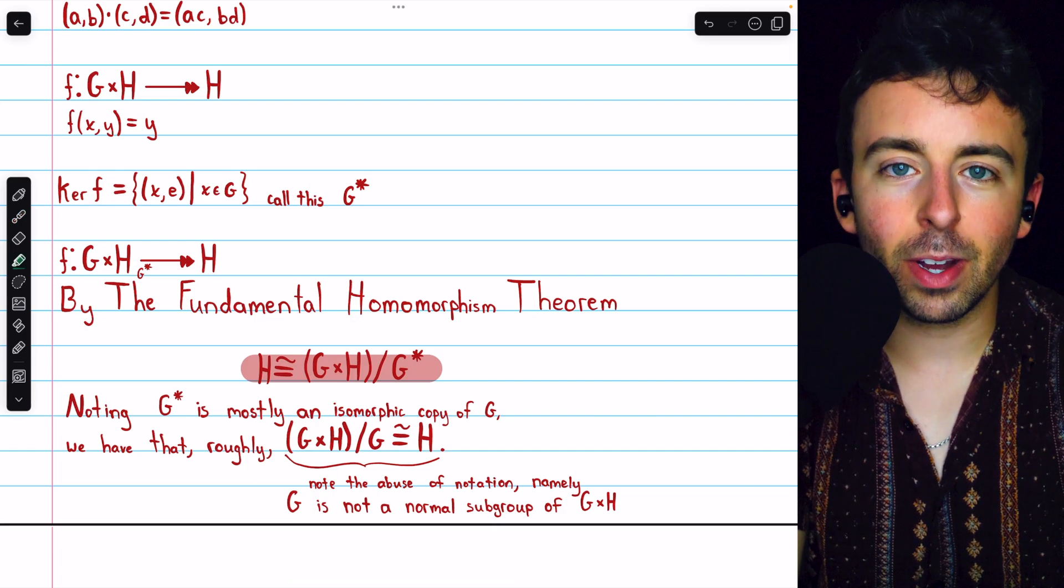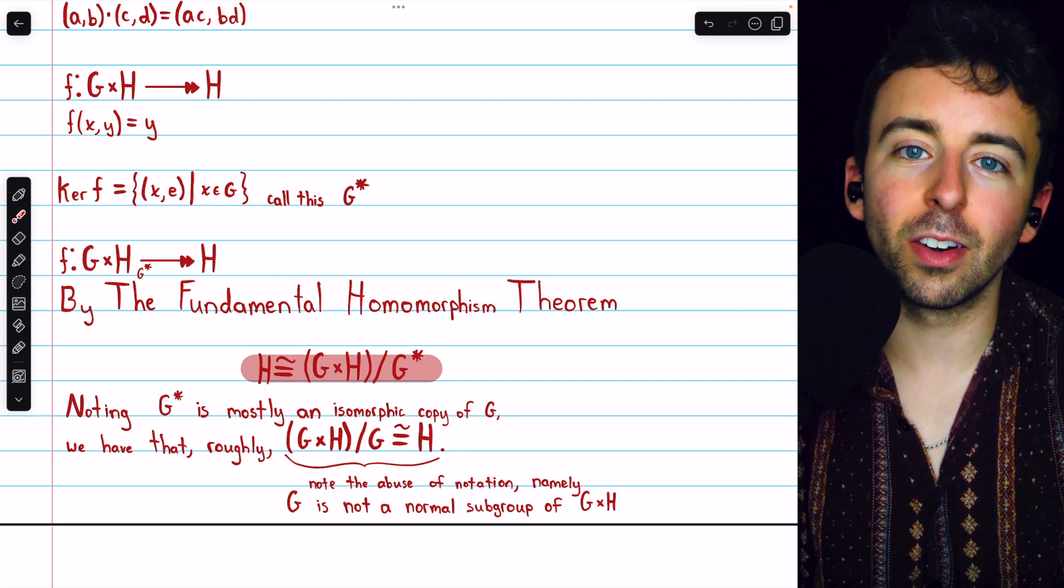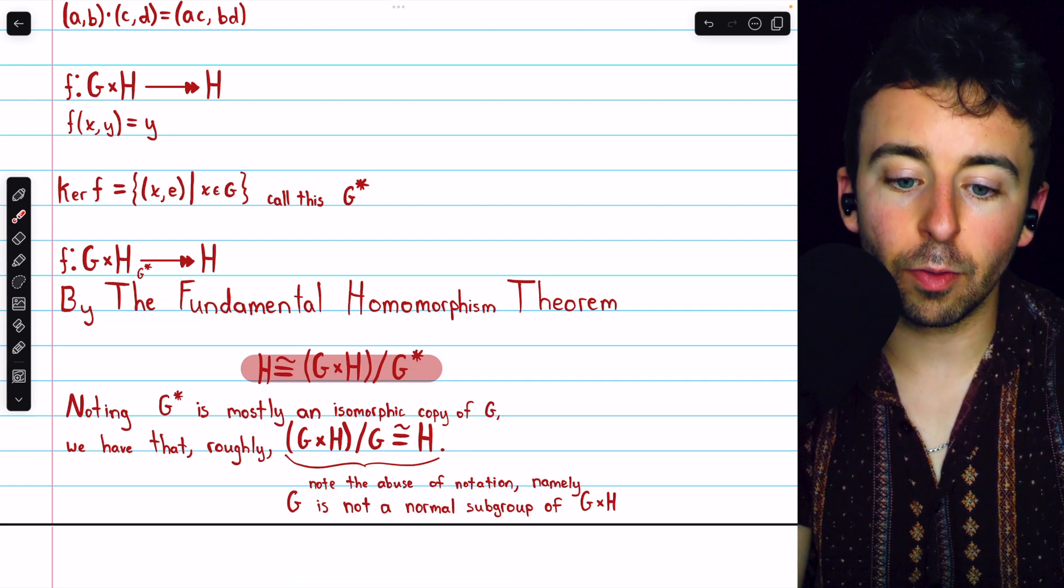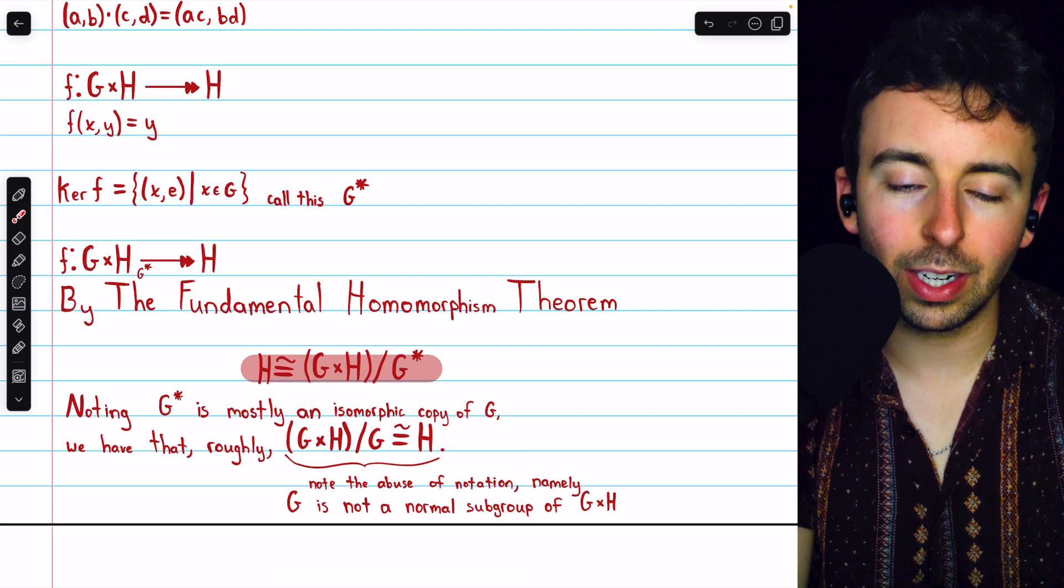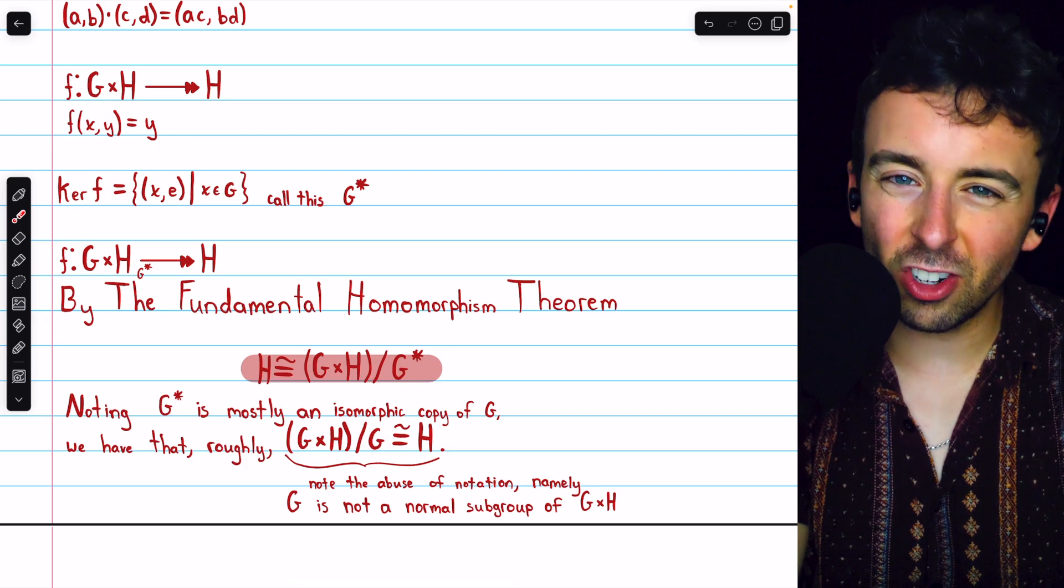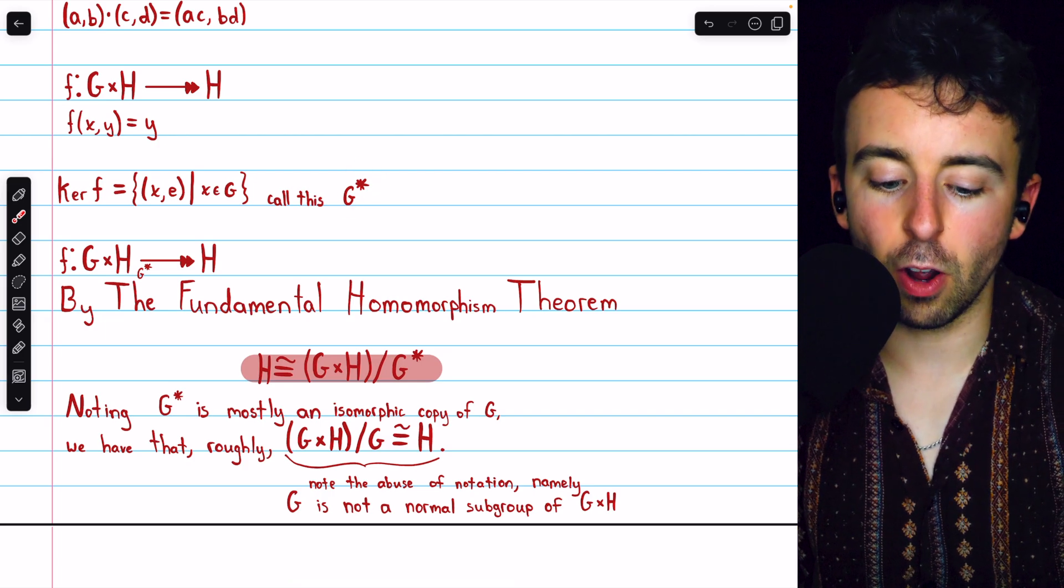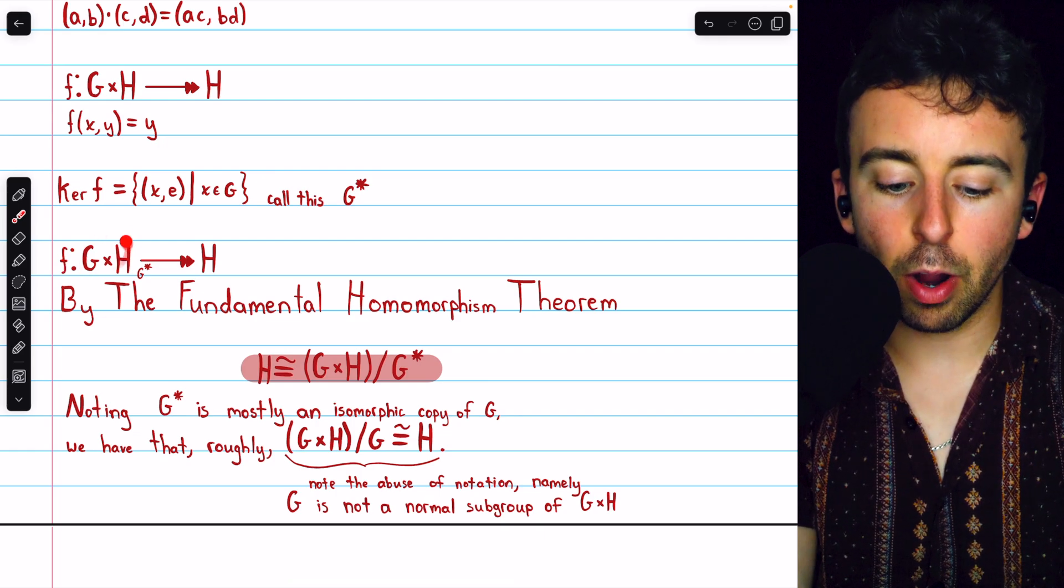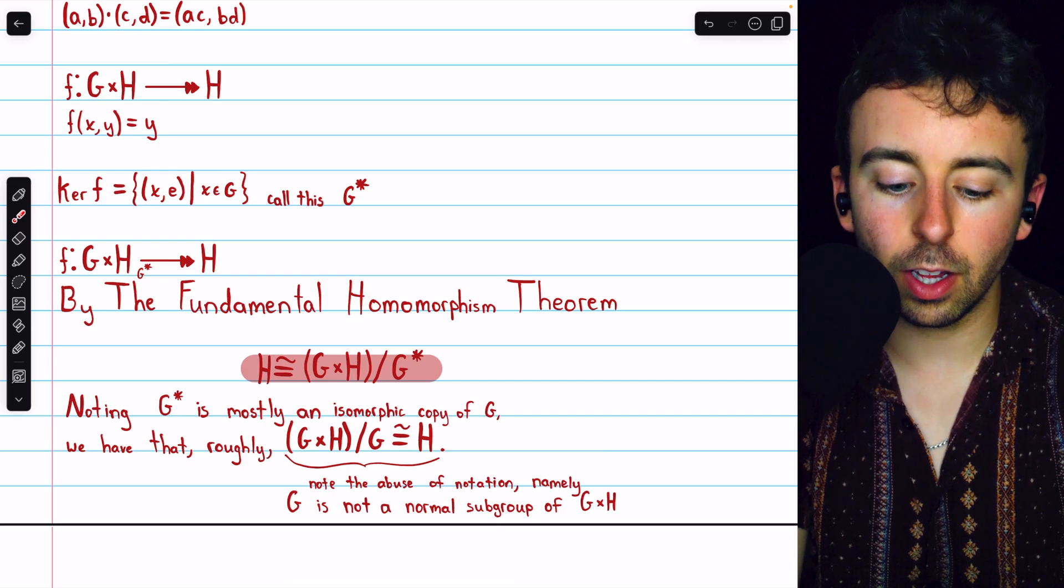Hopefully you can see that it pretty much just is the group G, except each element is an ordered pair that has this identity of H tacked onto it. But the first component, those are just all of the elements of G. The second component is just that fixed identity of H. So it's just like G, except it's all these ordered pairs. We're going to call it G star. So then we've got this homomorphism F mapping the direct product of G with H onto H with a kernel of G star.